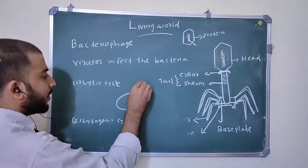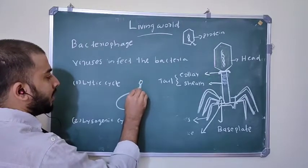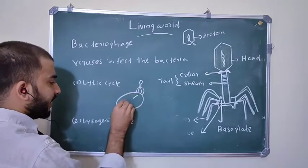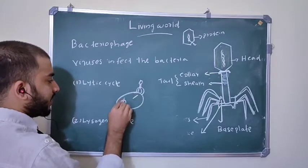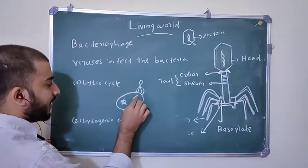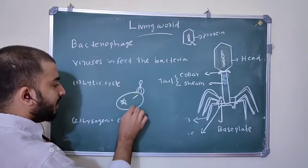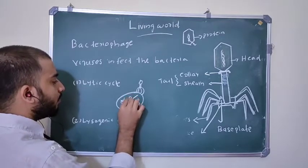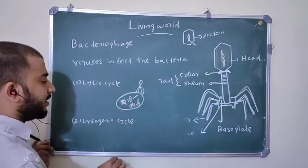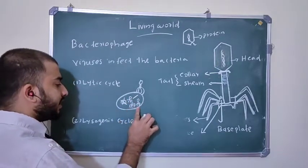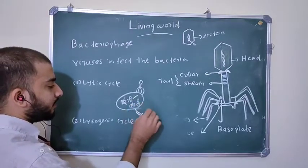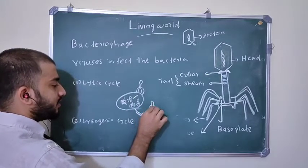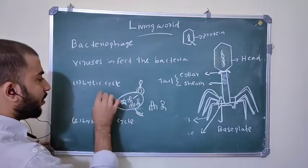In the lytic cycle, bacteriophage inject their DNA into the bacterial cell. This DNA disintegrates the bacterial DNA and takes control of the bacterial cell, producing more copies of viruses inside the bacterial cell. The bacterial cell then breaks, releasing the bacteriophage copies outside. This is called the lytic cycle because bacterial cell lysis takes place.